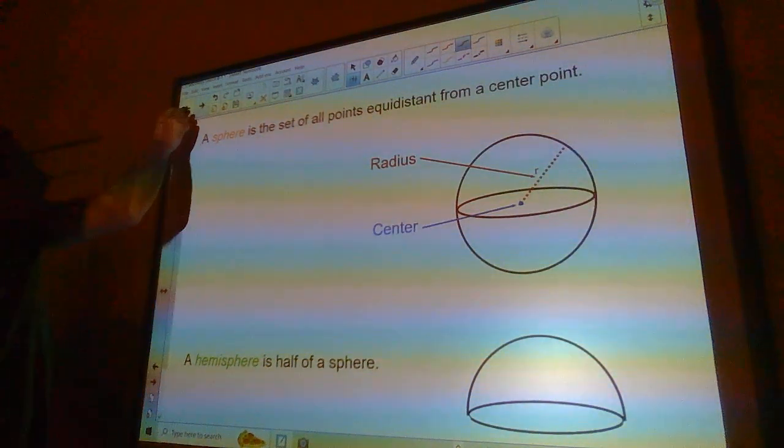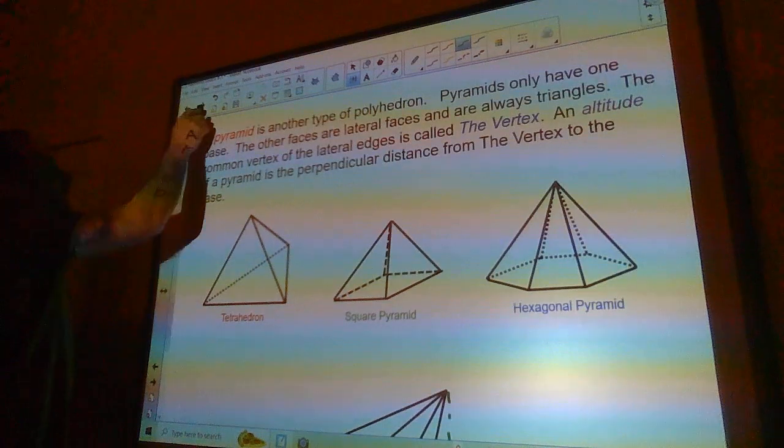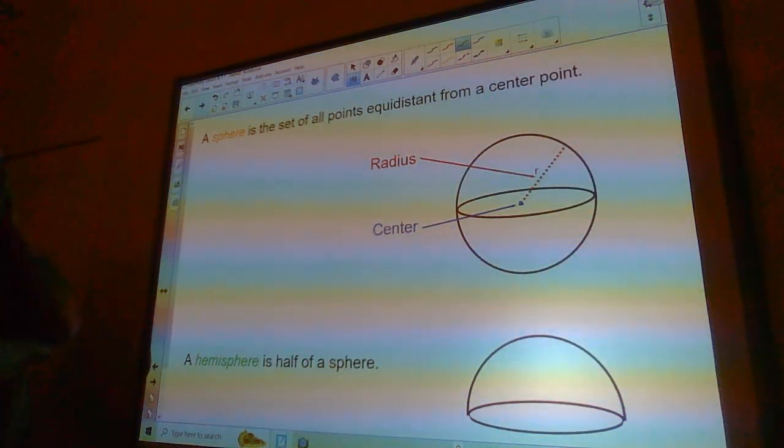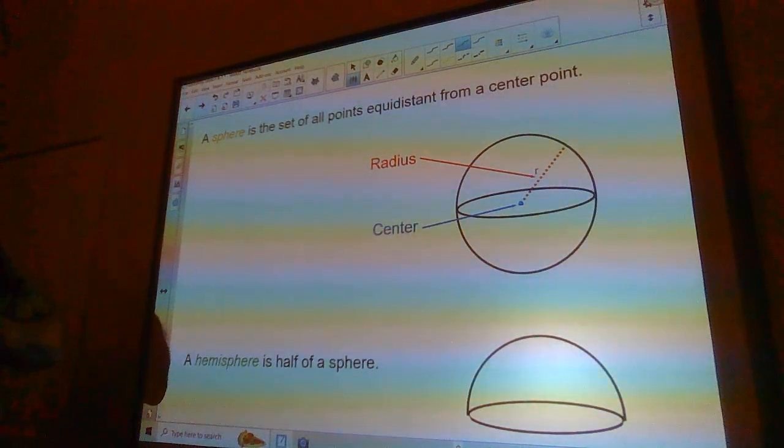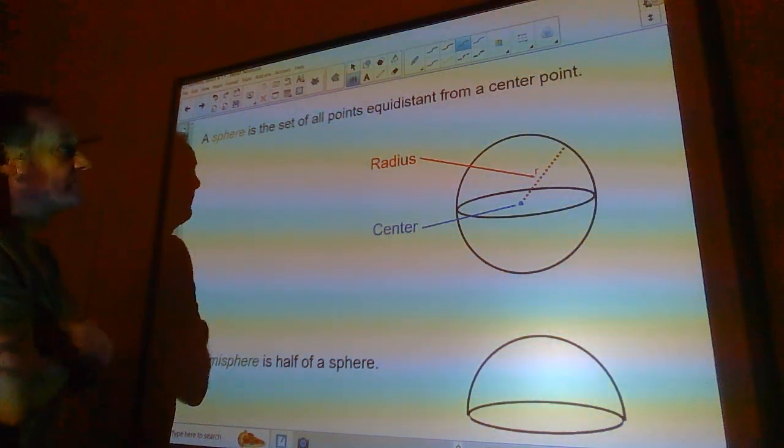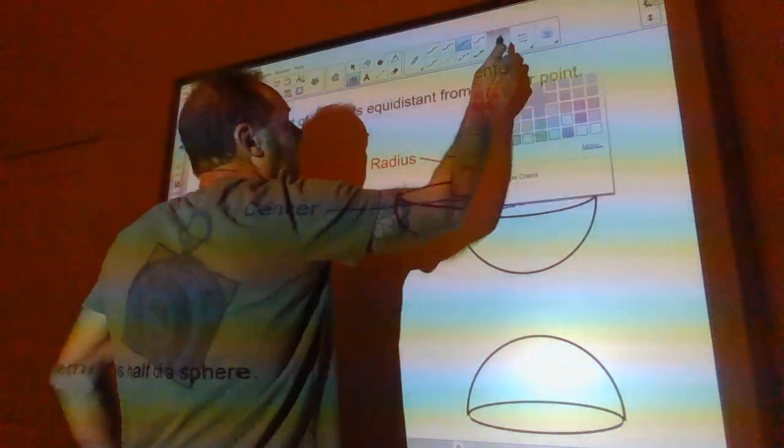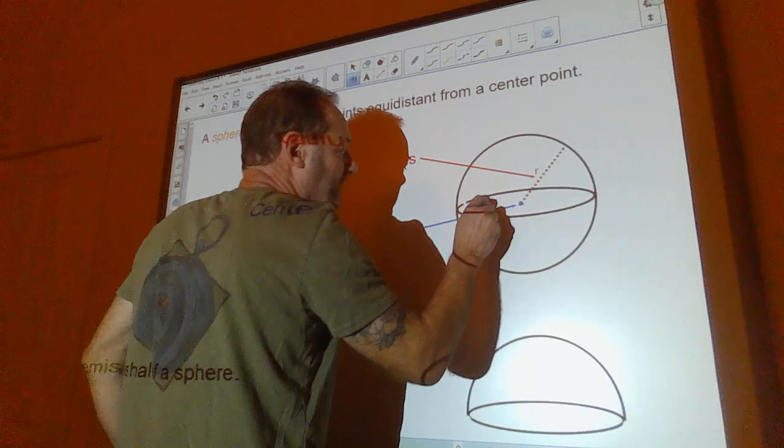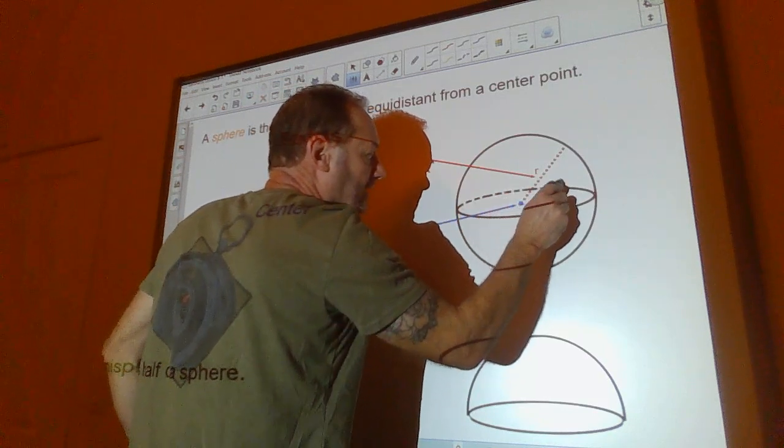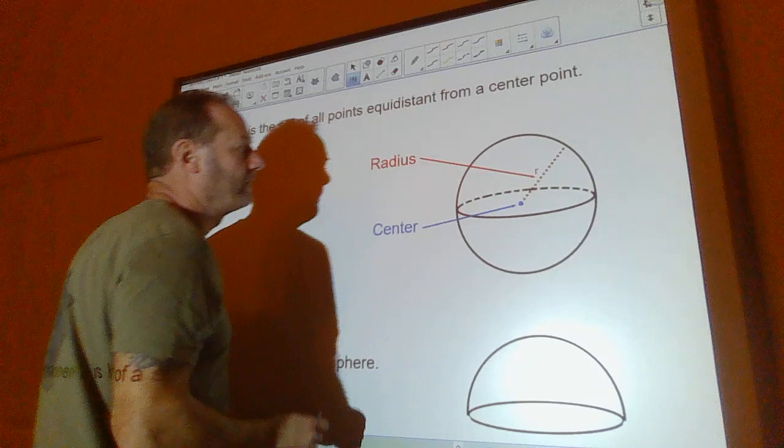A sphere. So a sphere is not a polyhedron because polyhedrons don't have curves. But it's treated as a polyhedron. A sphere. Now, be careful of this. A sphere is the set of all points equidistant from a center point. Not to be confused with a circle, which is the set of all points in a plane equidistant from a center point.